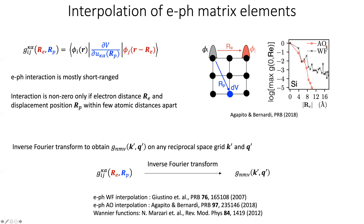As shown in the graph, increasing Re causes the amplitude of g to decrease exponentially — true for both atomic orbitals and Wannier functions. If we assume the interaction is non-zero only when the electron distance Re and displacement position Rp are within a few atomic distances, we can perform an inverse Fourier transformation from the real-space g to obtain g's on any reciprocal-space grid K′ and Q′. References for this interpolation procedure using Wannier functions and atomic orbitals are provided.